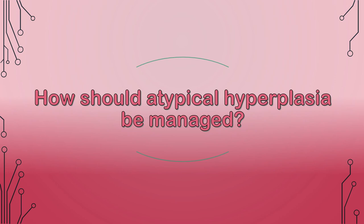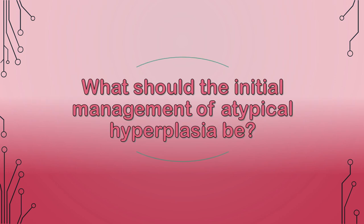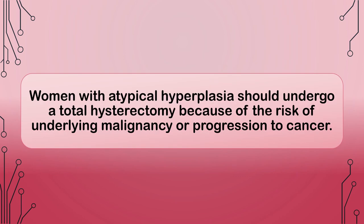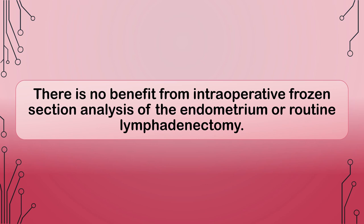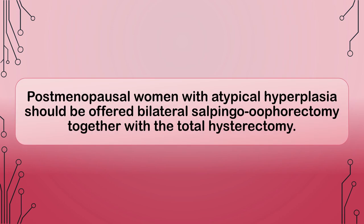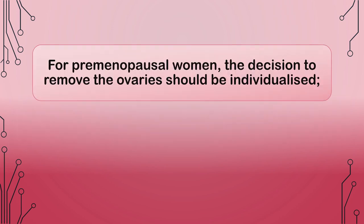How should atypical hyperplasia be managed? Women with atypical hyperplasia should undergo a total hysterectomy because of the risk of underlying malignancy or progression to cancer. A laparoscopic approach is preferable to an abdominal approach as it is associated with a shorter hospital stay, less postoperative pain, and quicker recovery. There is no benefit from intraoperative frozen section analysis of the endometrium or routine lymphadenectomy. Postmenopausal women with atypical hyperplasia should be offered bilateral salpingo-oophorectomy together with the total hysterectomy.